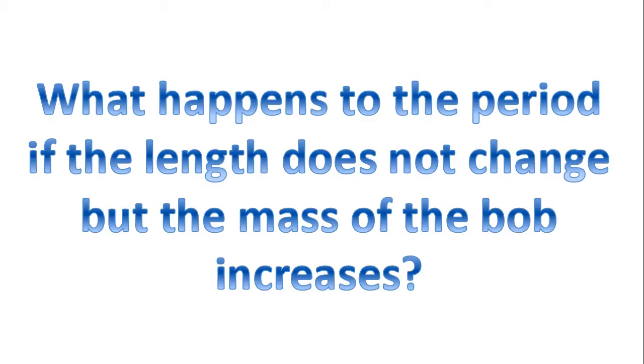So one of the questions I'd like you to answer is, what happens to the period if the length does not change but the mass of the bob increases? In other words, say I added two pieces of Lego at either end, what would happen?